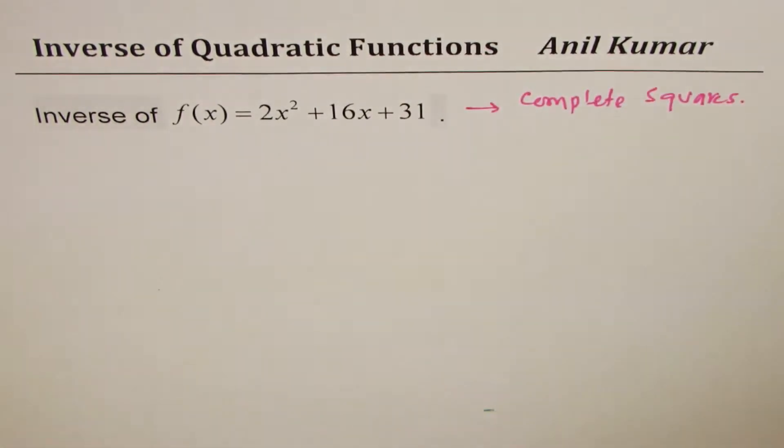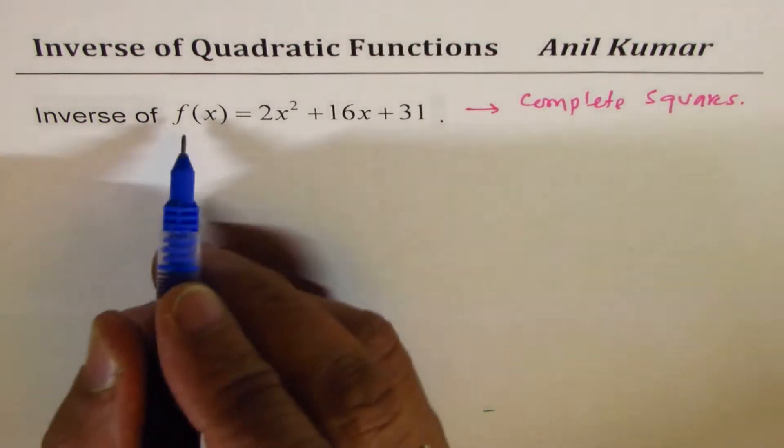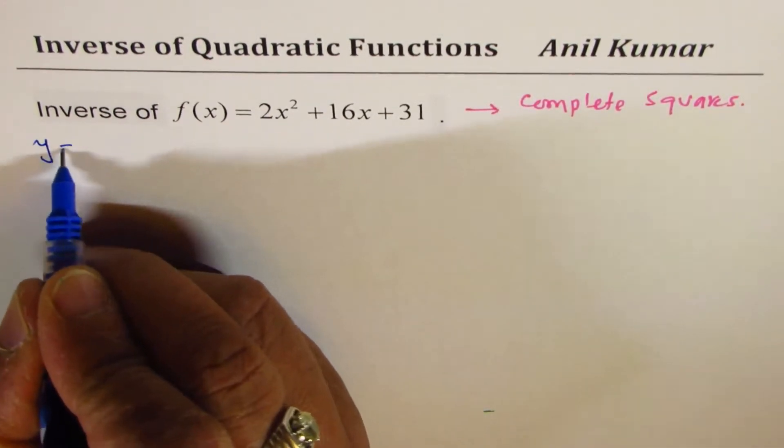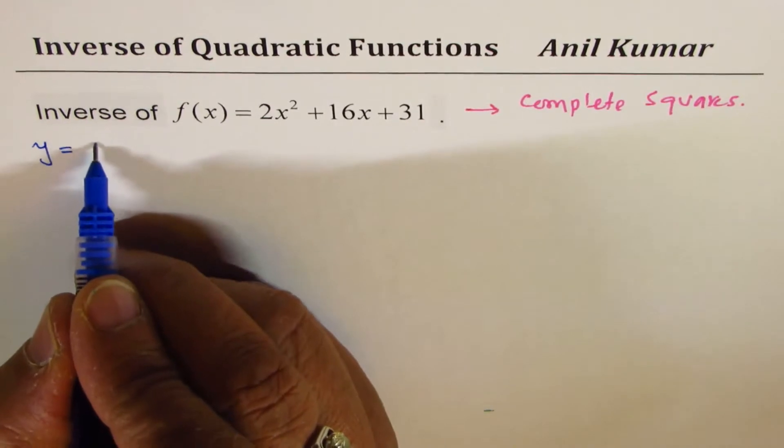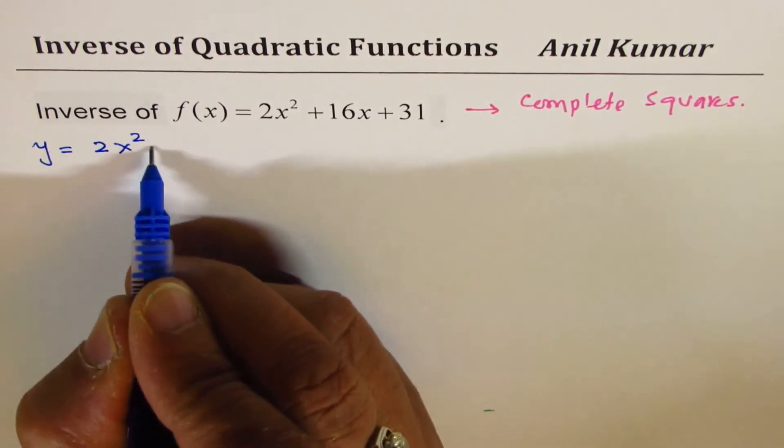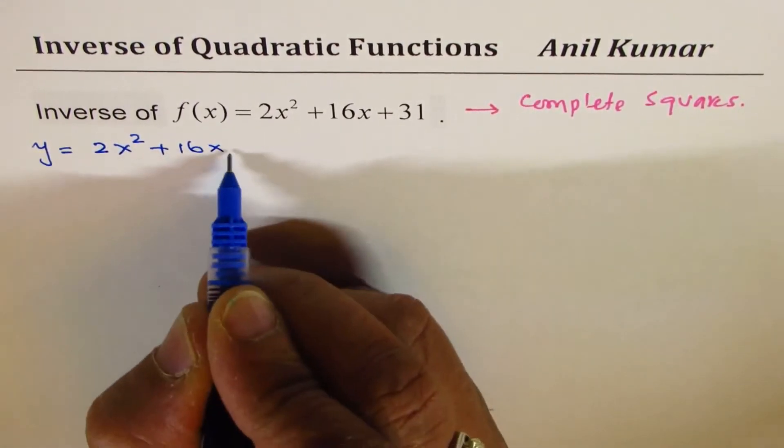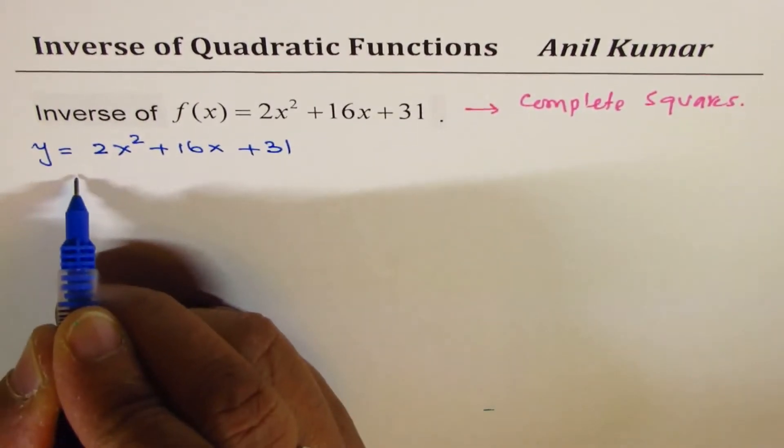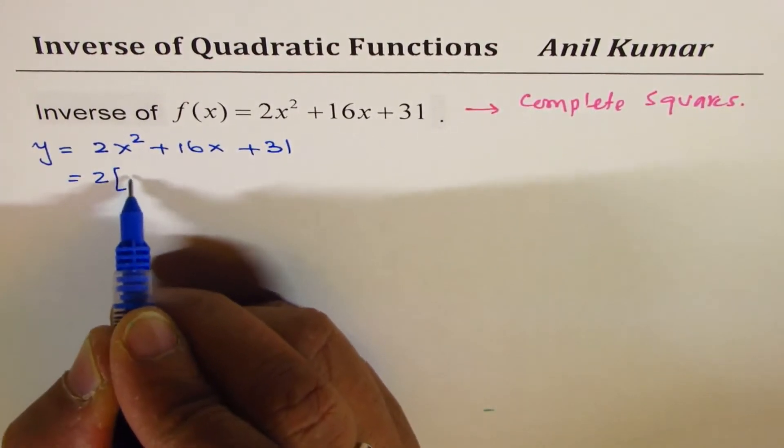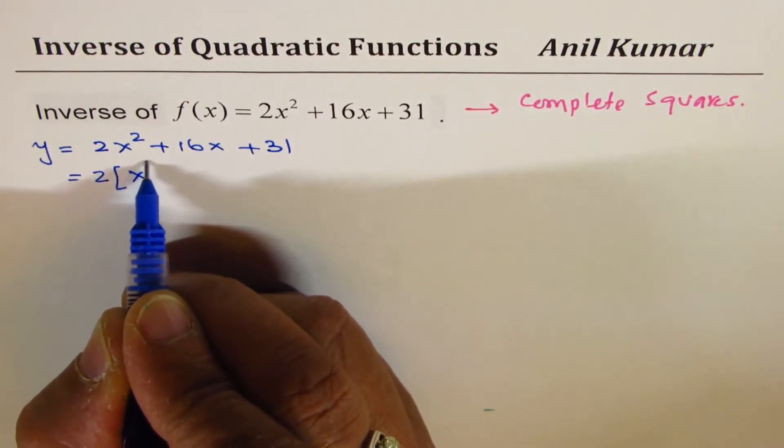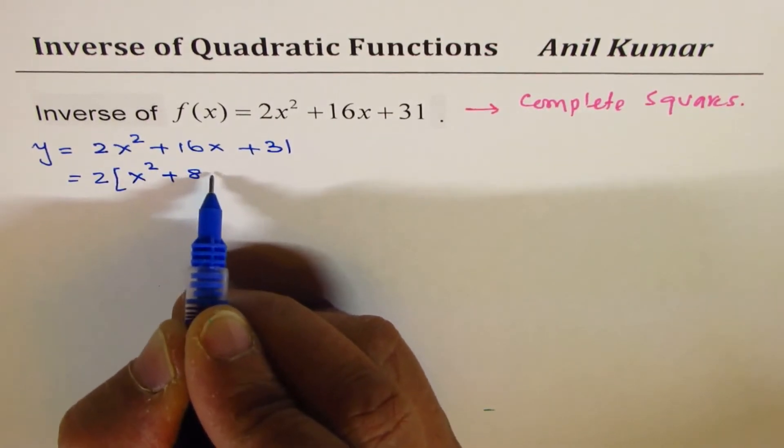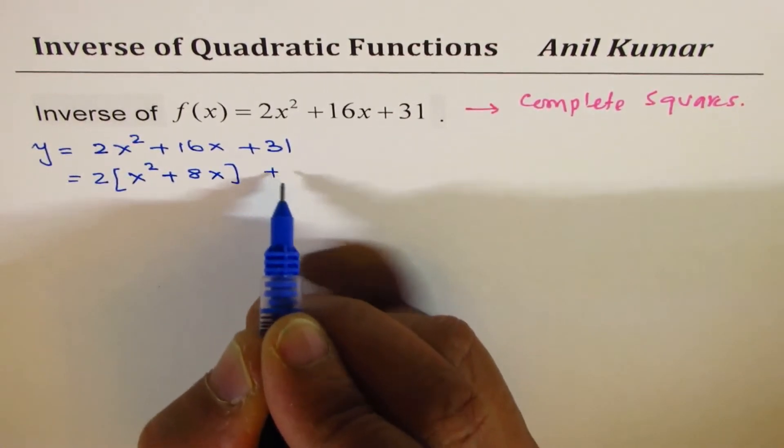We are going to write this expression as y equals to 2x squared plus 16x plus 31, taking 2 from the first two terms, we get x squared plus 8x plus 31.